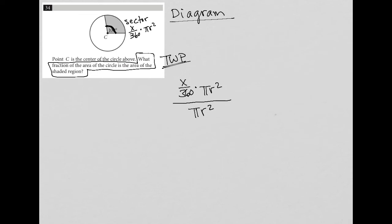So what are we left with? What is this fraction? Well, I can simplify this fraction because pi r squared here can cancel out pi r squared there, leaving me with just x over 360.